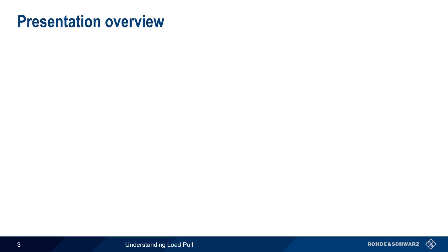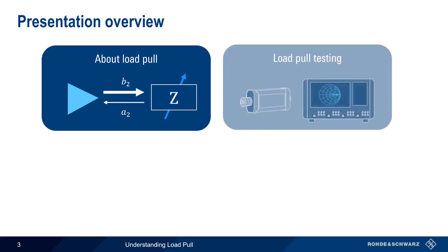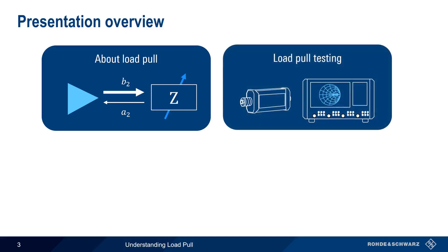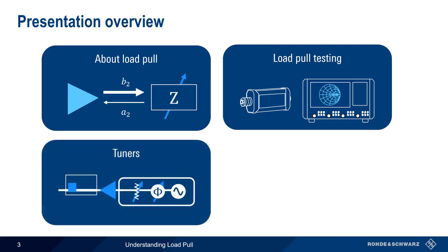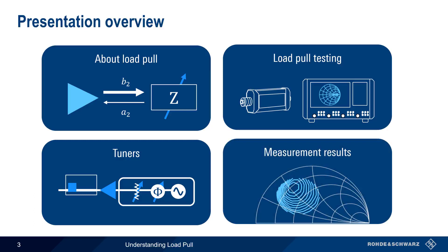This presentation is divided into four sections. In the first, we'll explain what Load Pull is and why it's used. We'll then introduce the two types of Load Pull testing and the instruments used to make Load Pull measurements. Tuners are a critical component in Load Pull testing, so we'll also spend some time discussing the different kinds of tuners. And in the final section, we'll show how Load Pull measurement results are used and displayed.